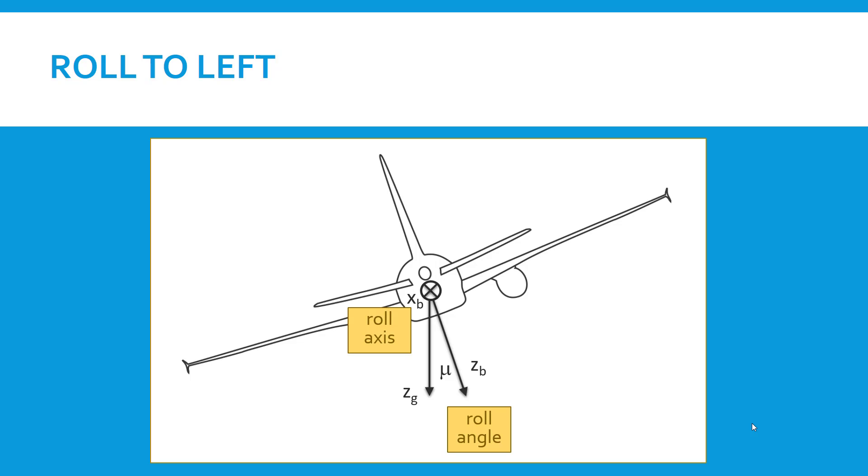The roll axis of course then is the longitudinal axis of the airplane, and here we are looking at it from the rear of the aircraft towards the front.